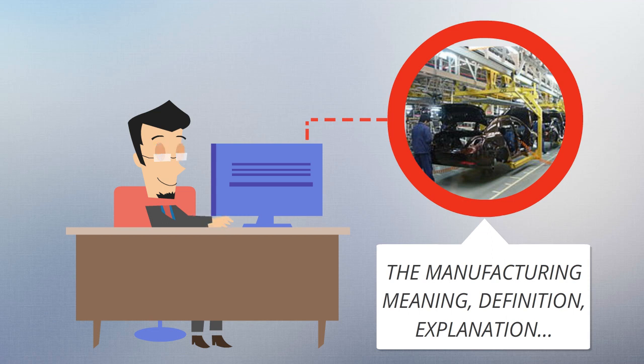Examples include aircraft, household appliances, furniture, sports equipment, and automobiles. Finished goods may also be sold to wholesalers, who in turn sell them to retailers, who then sell them to end-users and consumers.